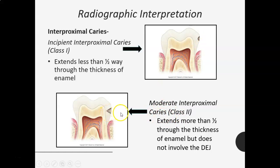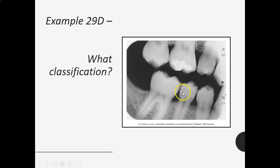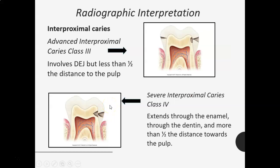Moderate interproximal caries is Class 2, and that extends more than halfway through the thickness of the enamel but not quite to the DEJ — so it's still only in the enamel but more than halfway, and has not reached the DEJ. Here's an example on the distal of tooth 29: you can see just a little bit of a notch. I would say that's just barely under 50%, so I would put this as a Class 1.